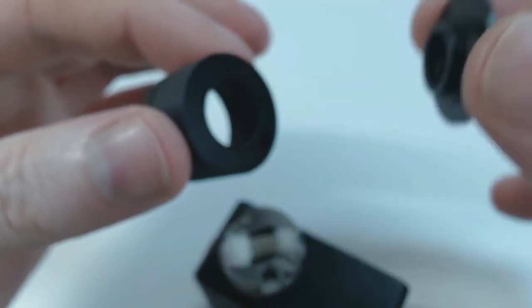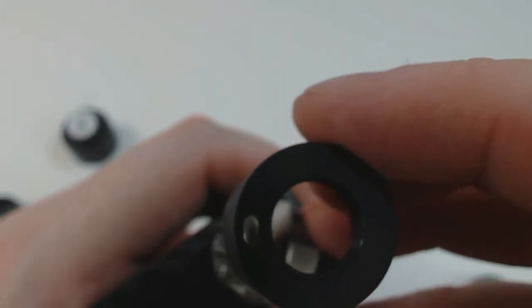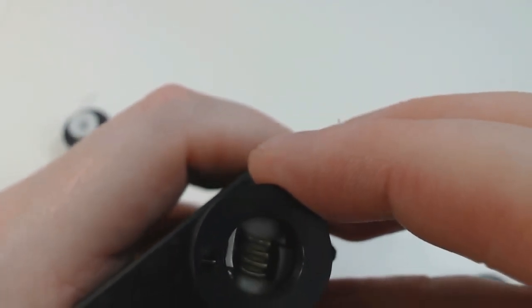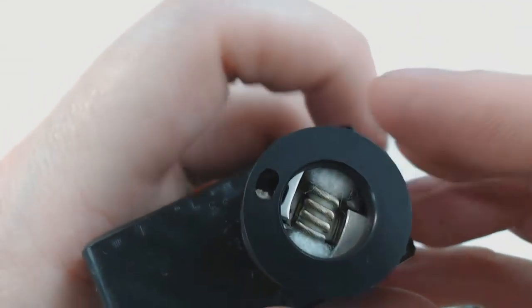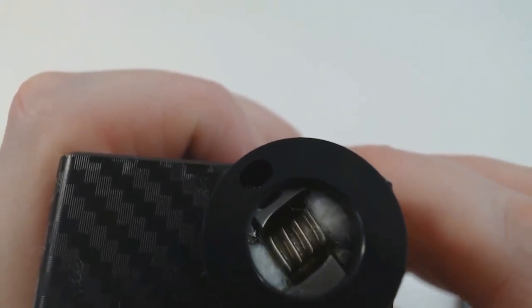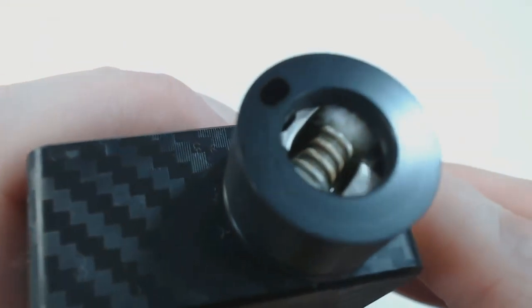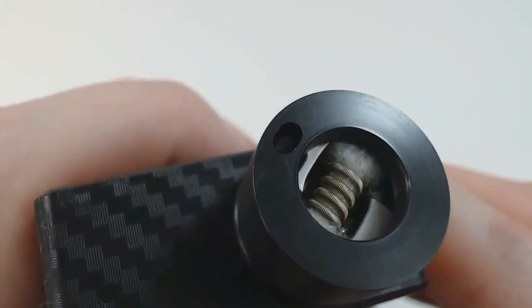We just pop that on. The only thing about this top cap is you need to take this piece off, find where your airflow is, just line that up with the airflow on the RDA itself. Pop that down just like that. You can squonk away. You'll see the juice coming up there. There's no fear of that leaking at all.